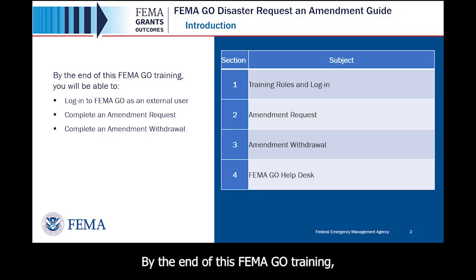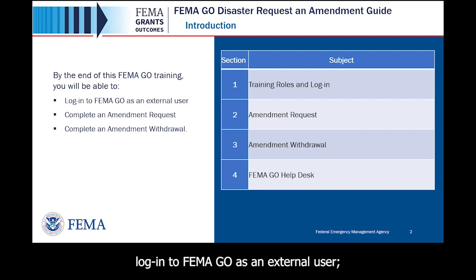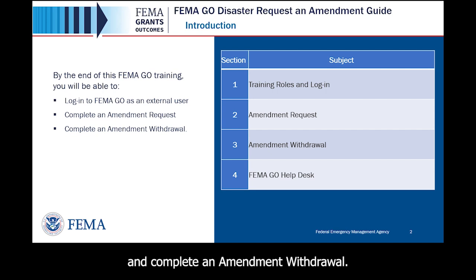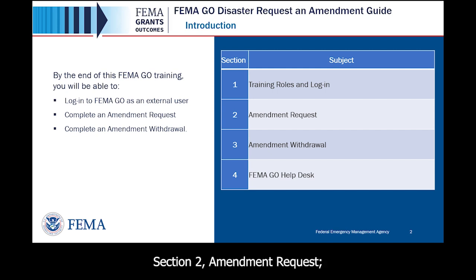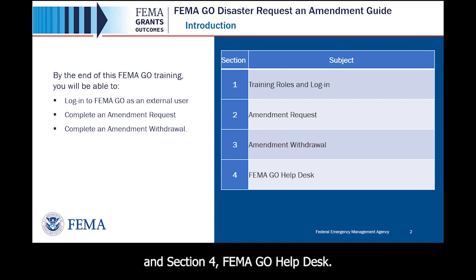By the end of this FEMA GO training, you will be able to log in to FEMA GO as an external user, complete an amendment request, and complete an amendment withdrawal. The subjects covered in the table of contents include Section 1: Training Roles and Login; Section 2: Amendment Request; Section 3: Amendment Withdraw; and Section 4: FEMA GO Help Desk.